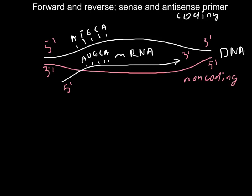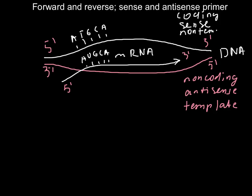As you can see, the top strand of the DNA has the same prime ends as the messenger RNA. Also, since messenger RNA contains sense information, the top strand — the coding strand — is also called the sense strand, and the bottom strand would be the antisense strand. The bottom strand is complementary to the messenger RNA and is also called the template strand. The top strand is called non-template, and we can also call the top strand positive and the bottom strand negative.